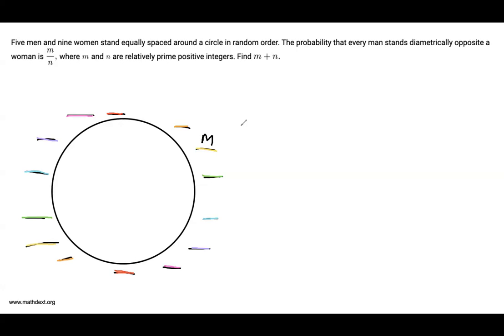Now, since I could place this guy anywhere, it's not going to really change the outcome. But I want the probability that every man stands diametrically opposite a woman, meaning that whoever I place in this yellow seat must be a woman.